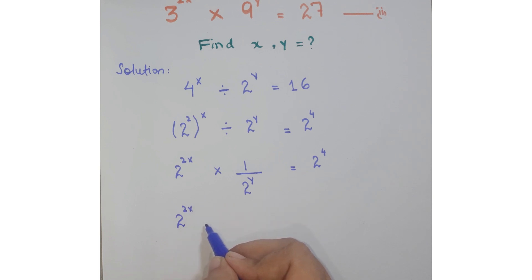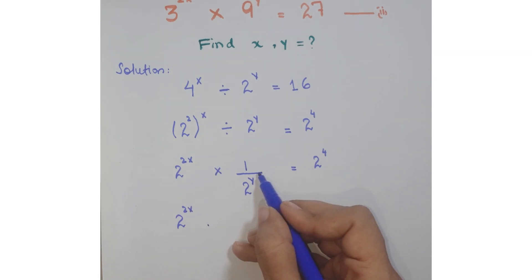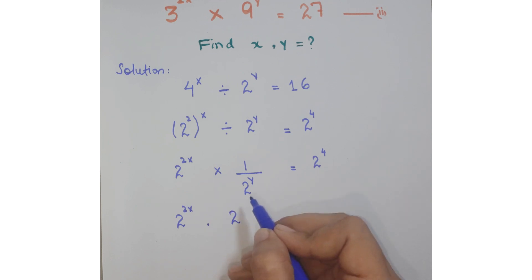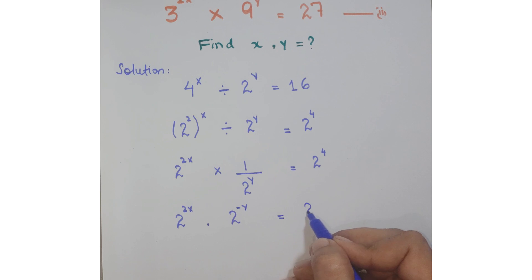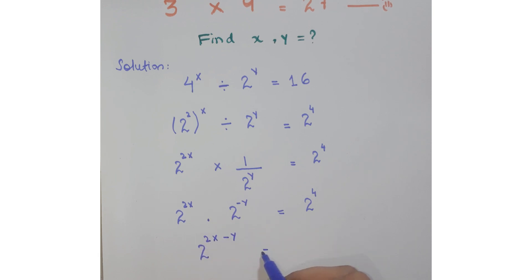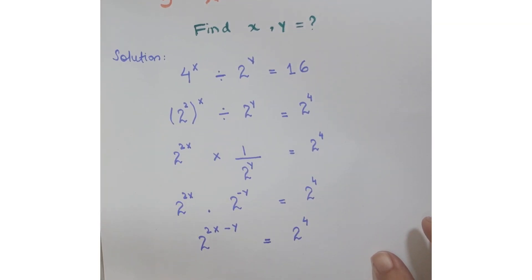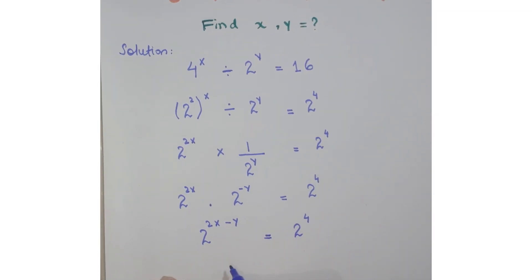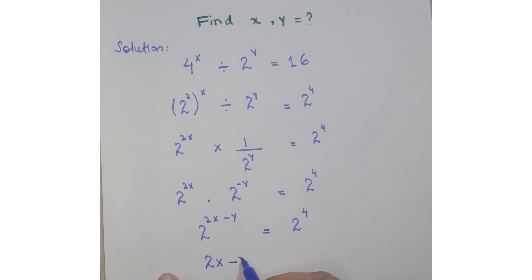Next, take the power of 2 to the power y up to the numerator and change the sign of the exponent. Since the bases are the same, add up the powers to get 2 to the power 2x minus y equals 2 to the power 4. Since the bases are the same on both sides, equate the exponents: 2x minus y equals 4. Call this equation A.